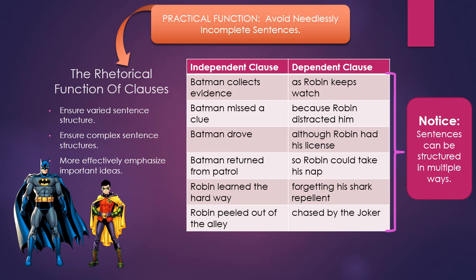The third option — and it's a little clunky sometimes — is to embed the dependent clause in the middle of the independent clause: 'Batman, as Robin keeps watch, collects evidence.' This creates an even more complex construction implying two people doing separate tasks simultaneously. I don't necessarily love that third version for these two clauses, but it's possible. The same is true for all five remaining examples. So now that you've listened to me go on and on about this, let's do a little bit of practice.